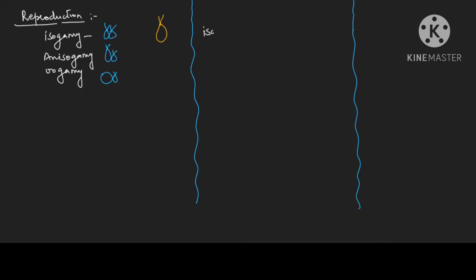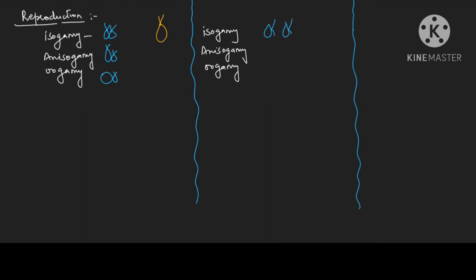In brown algae also, it can show isogamy and anisogamy. In brown algae, isogamy means gametes are similar morphologically, but they do not have apically inserted flagella — they have laterally inserted flagella in a heterokont condition, meaning the two flagella are unequal. Please remember: in brown algae, flagella are laterally inserted and heterokont.